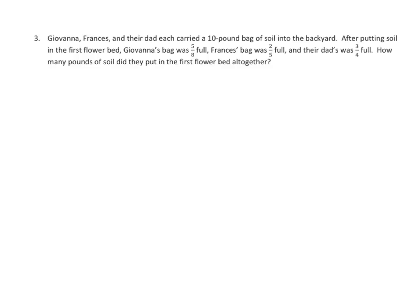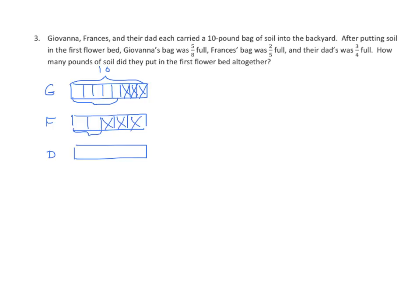We're going to, just like Jack, Jill, and Bill, make three tape diagrams all the same length. We know that these are all ten. Giovanna's was five-eighths full when she was done. So if we have five-eighths left, how much was dumped out? That would be three-eighths. And Francis was two-fifths full, so how much did she dump out? That would be three-fifths. And Dad was three-fourths full. How much did he dump out? This much.